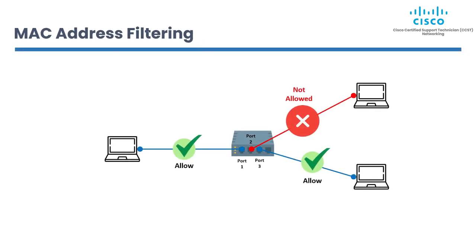MAC address filtering is a network security technique used to control access to a network by allowing only specific devices to connect. It works by creating a list of approved MAC addresses and allowing only devices with those MAC addresses to connect. Devices with MAC addresses not on the approved list are denied access. MAC address filtering is often used as a supplementary security measure alongside other protocols such as WPA2-PSK. For example, you can set a switch to deny any device connecting to port 2, while hard-coding which MAC addresses are allowed on port 1.